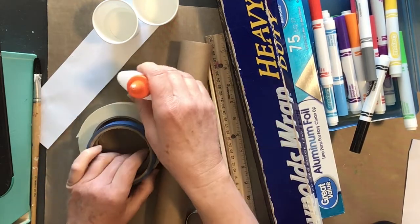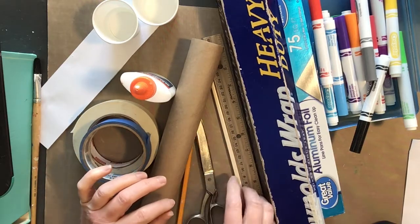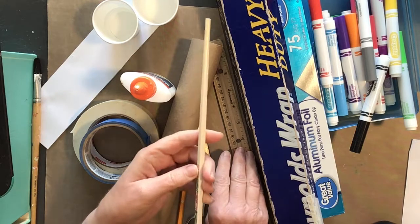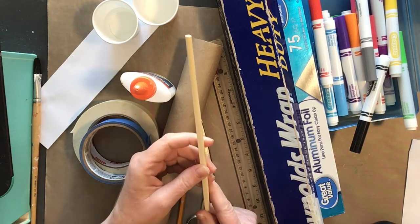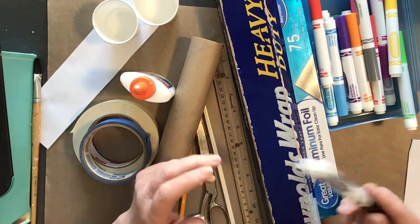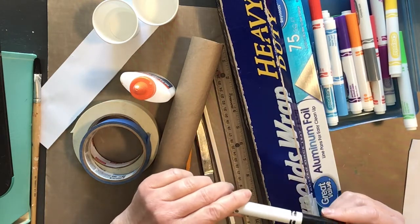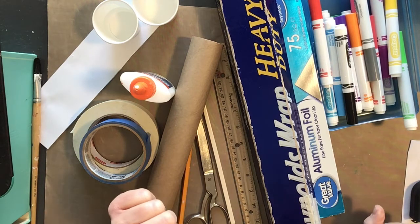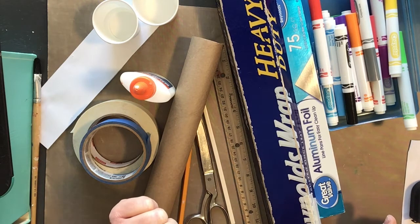You'll need some glue or a glue stick, a pencil, scissors, some type of a dowel or stick. This is a chopstick that you can wrap the foil around, a ruler and markers or crayons or possibly paint, whatever you have for decoration. Those are the materials. Gather those things together and then let's get started.